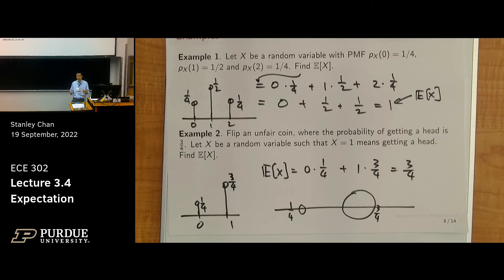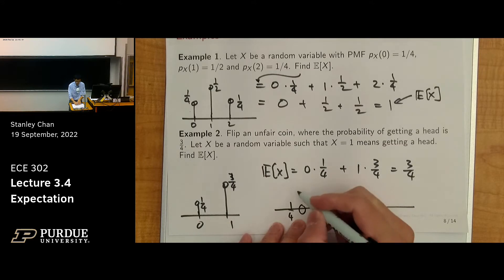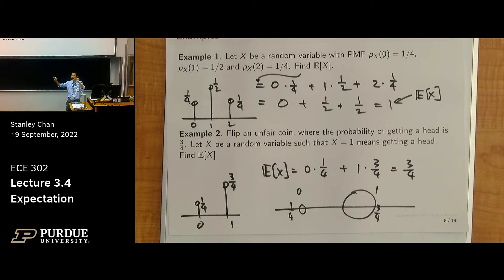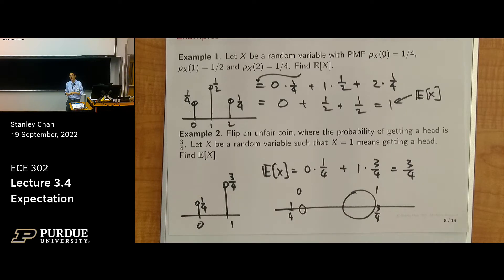The center of gravity depends on the state. One end is 0, the other end is 1. When you have mass on the left and mass on the right, there should be a center of gravity. The 3/4 tells you where the center of gravity is. If you have a fair coin, the center of gravity is 0.5. When you have a biased coin, the center of gravity shifts towards 1 — meaning you have a higher chance of landing on 1. So you won't get 3/4 of a head, but you have more probability of landing there. That's the meaning of this expectation.